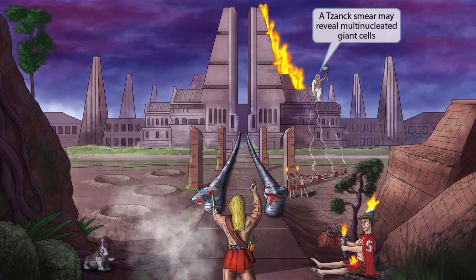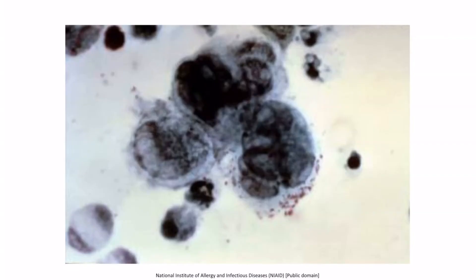Our symbol for the Tzanck smear is Zeus, because these sound somewhat similar. Also think of Zeus holding up his giant, powerful hammer for multinucleated giant cells. So HSV can be diagnosed with a Tzanck smear, which reveals multinucleated giant cells. This is an image of a Tzanck smear — there are three multinucleated giant cells in the center of the image. This multinucleated process is thought to occur as the virus rapidly replicates in the host cell nucleus, which results in abnormal cellular division.